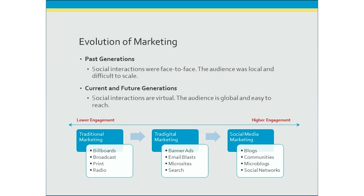Currently, our social interactions are more virtual — the audience is global, and because of the internet, it's easy to reach. If you wanted to market years ago, you had to put up a sign on a billboard or broadcast over radio or television. But a lot of advertising was done in physical print — newspapers, magazines, brochures, and things mailed to people's homes. We call that traditional marketing. Then we began to evolve into what we call digital marketing, as computers became part of everyday business.